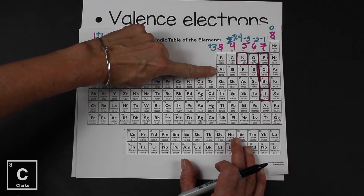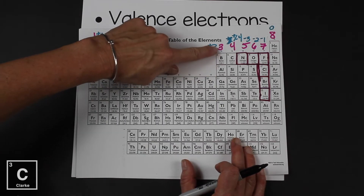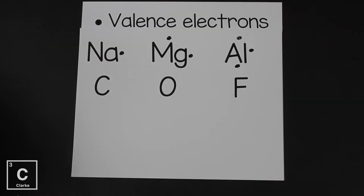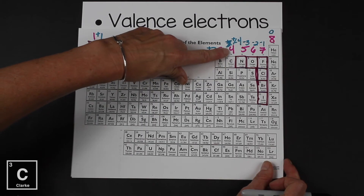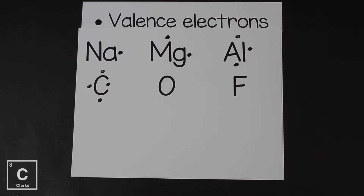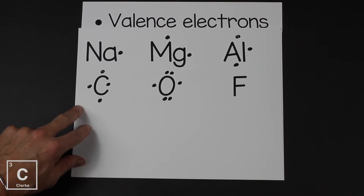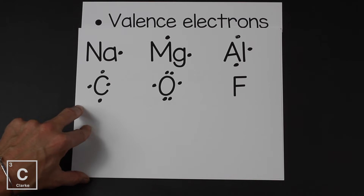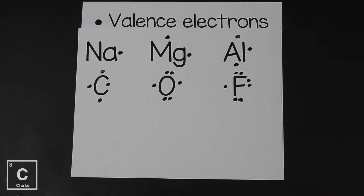Aluminum is in group three, three valence electrons. Carbon has four valence electrons, so this is what carbon's Lewis dot structure would look like. Oxygen is in group 16, it's going to have six valence electrons — here's oxygen's Lewis dot structure. And lastly, fluorine is in group 17, has seven valence electrons, and so here's fluorine's Lewis dot structure.